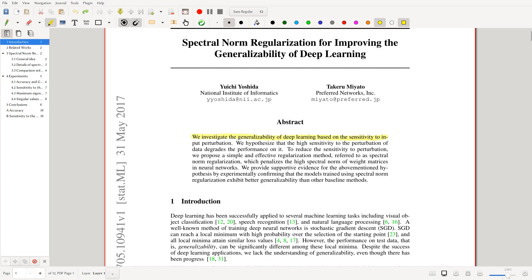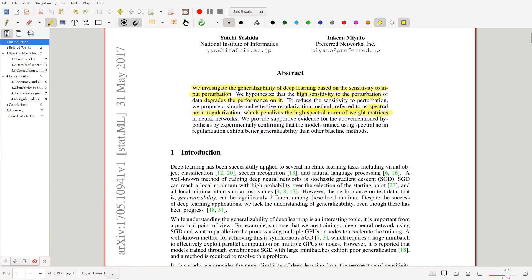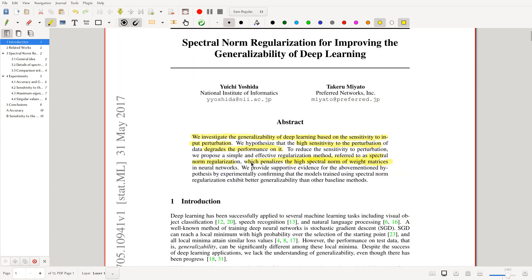We investigate the generalizability of deep learning based on the sensitivity to input perturbation. We hypothesize that high sensitivity to perturbation degrades performance on the data. So to do it, we introduce this method of Spectral Norm Regularization, which penalizes the high spectral norm of the weight matrices. Okay, cool. Sounds pretty good.